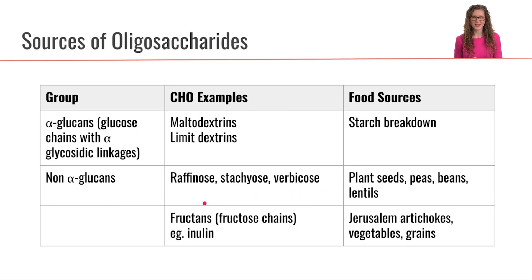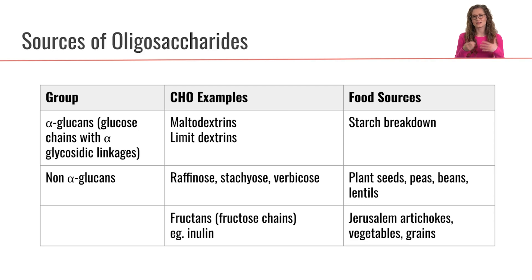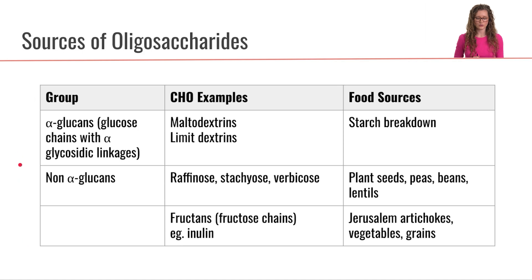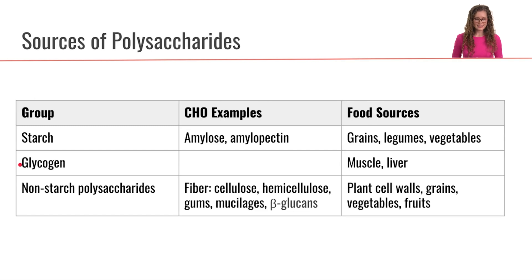If we look at the non-alpha glucans, those are some of the flatulent oligosaccharides we talked about last time — like raffinose, stachyose, and verbascose — and we're going to find those in plant seeds, peas, beans, lentils, and different types of legumes. We also have the fructans, which are chains of fructose such as inulin, and we'll find fructans in sources like Jerusalem artichokes, some types of vegetables, and some types of grains.